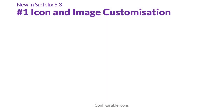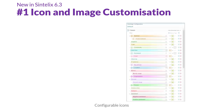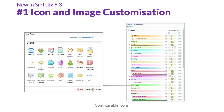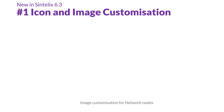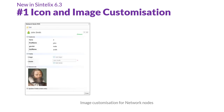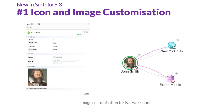In 6.3, customizing icons of entities to suit your visual preference can be done quickly and easily via the upgraded ontology. Images in documents can now also be extracted and associated with specific entities to help you build a richer view of your information.